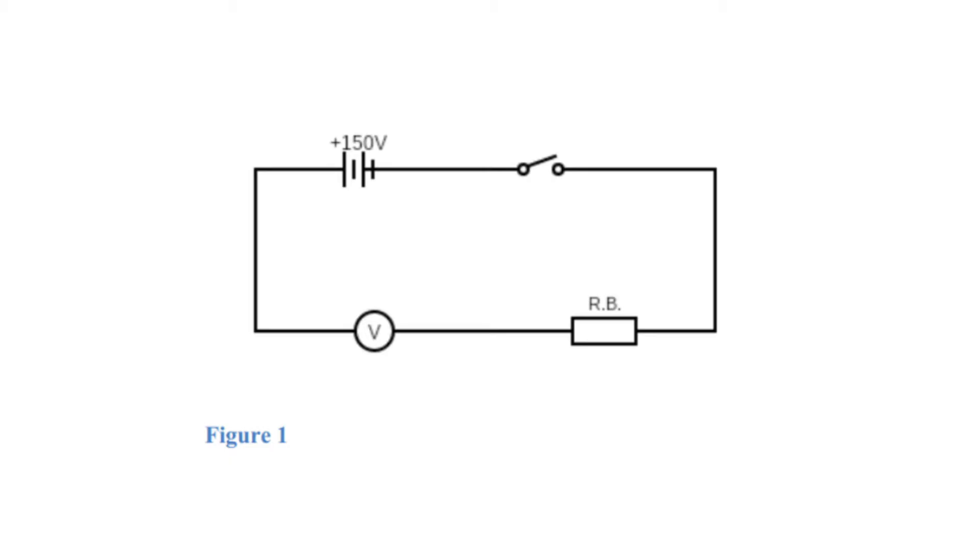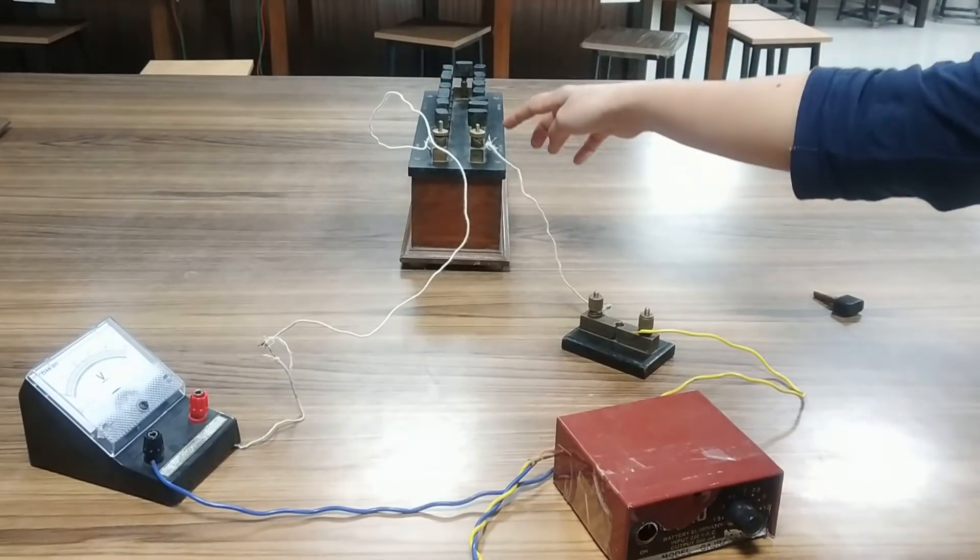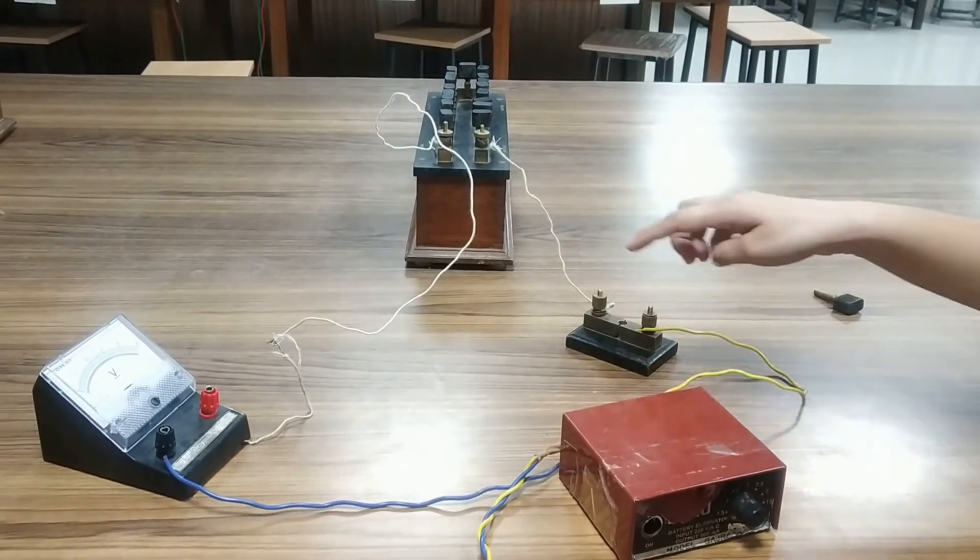Step first, determination of voltmeter resistance. In this step, we will measure the resistance of voltmeter that we are using here. Firstly, make the connections as shown in figure. We have connected a voltmeter, a resistance box and a battery in series.